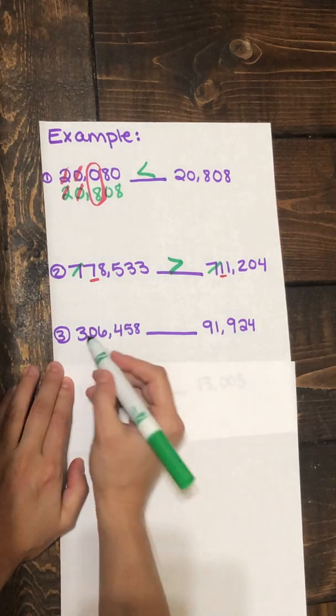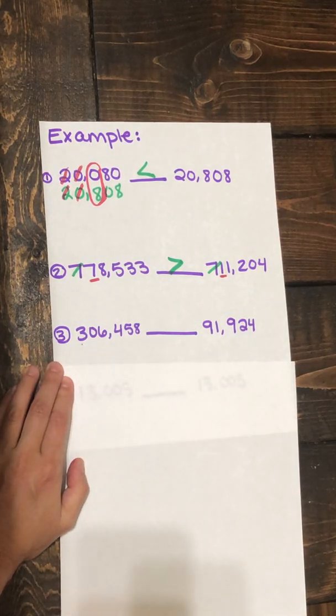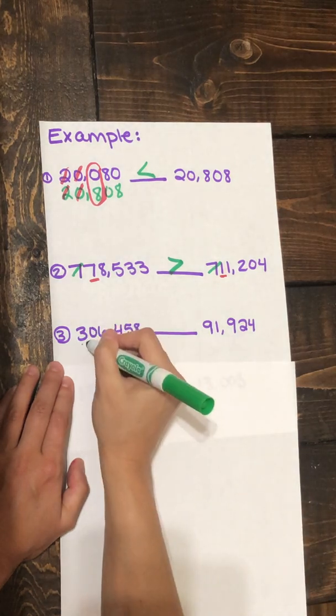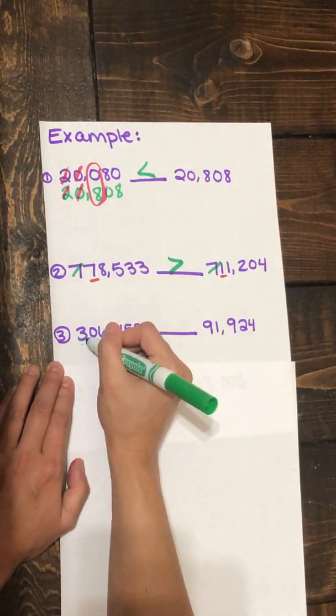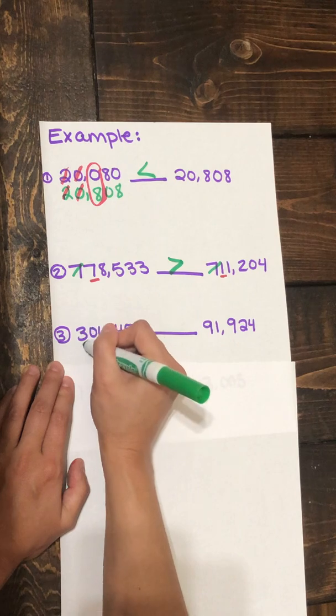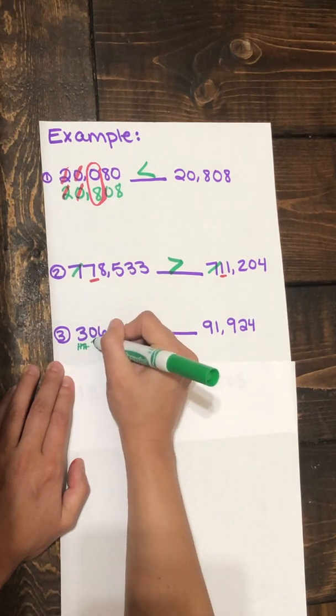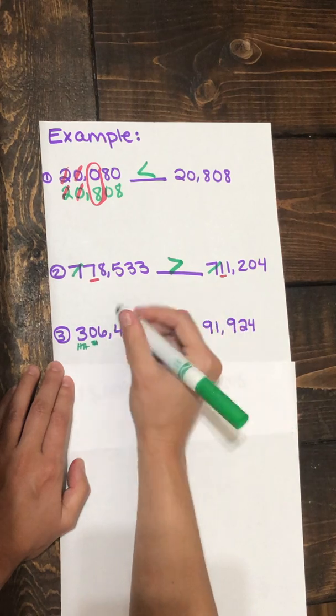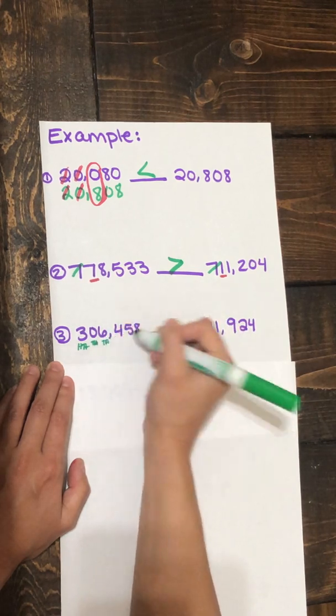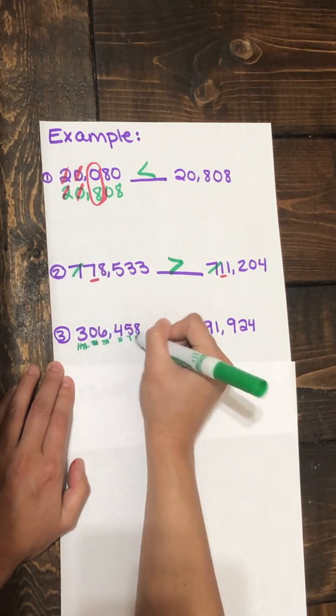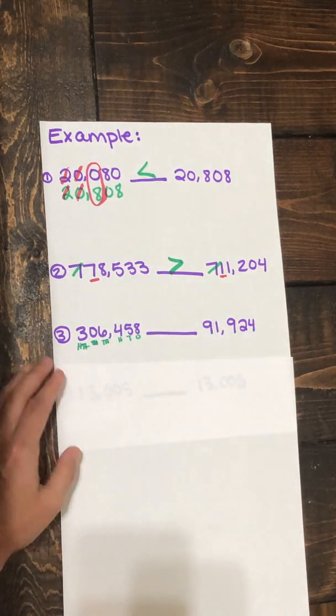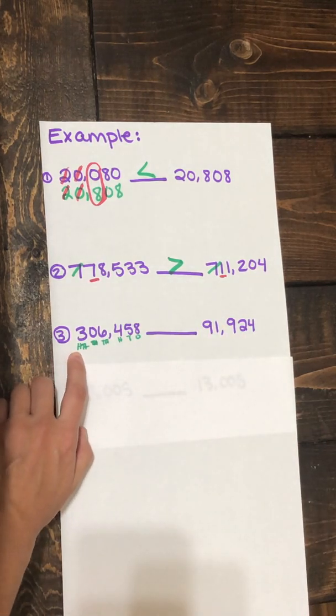What place is this three in? It is in the hundred thousands place. We can quickly draw a little place value organizer underneath. So this would be the hundred thousands, the ten thousands, the thousands, the hundreds, the tens, and the ones. This was in the hundred thousands place.